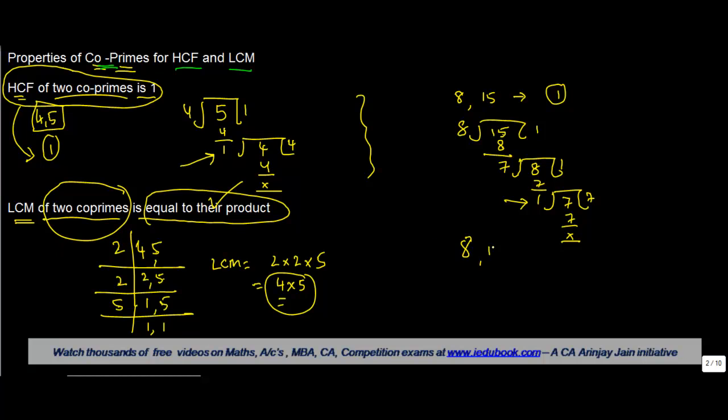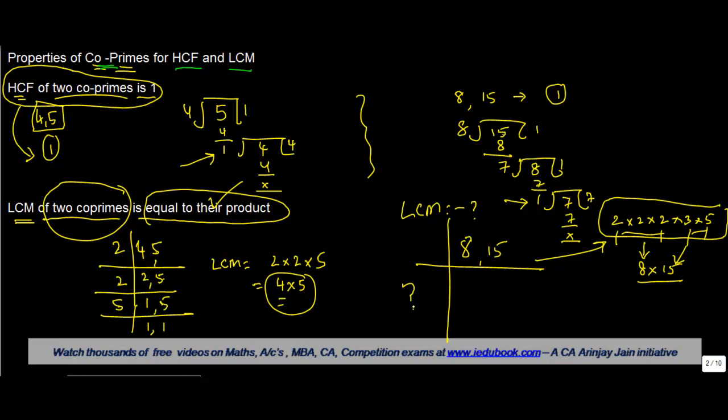Similarly, find out the LCM of 8 and 15. I'm just leaving this for you guys, but you'll be surprised to know that it will be 8 × 15 only. The numbers you get will be 2 × 2 × 2 × 3 × 5. When you compute the LCM, when you club these three 2s, it gets you 8. 3 × 5 will give you 15. Work this out for yourself.